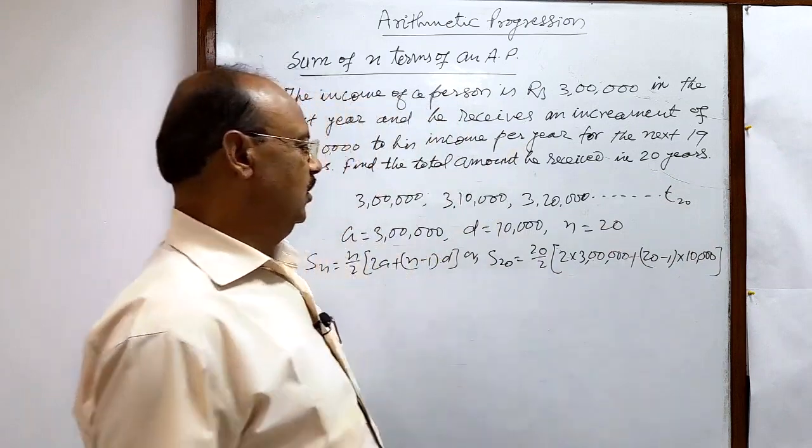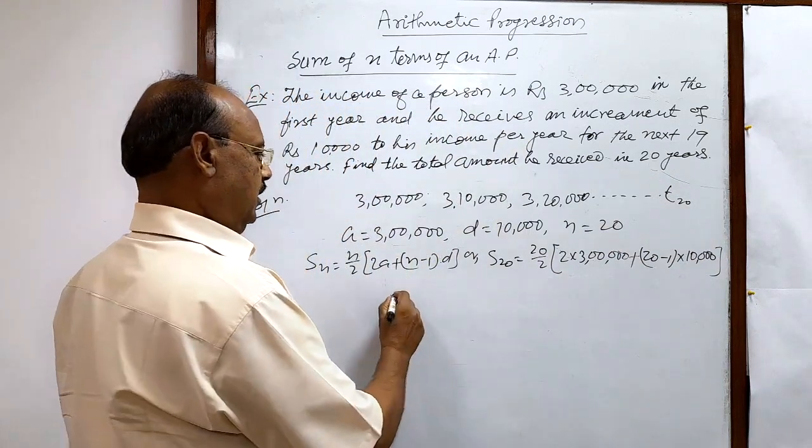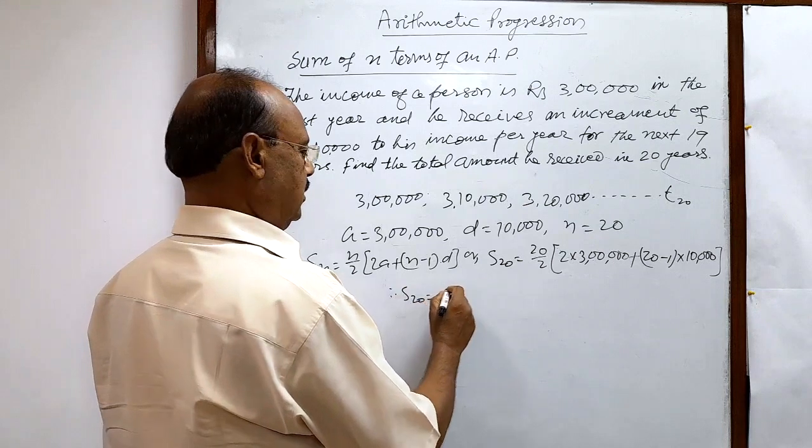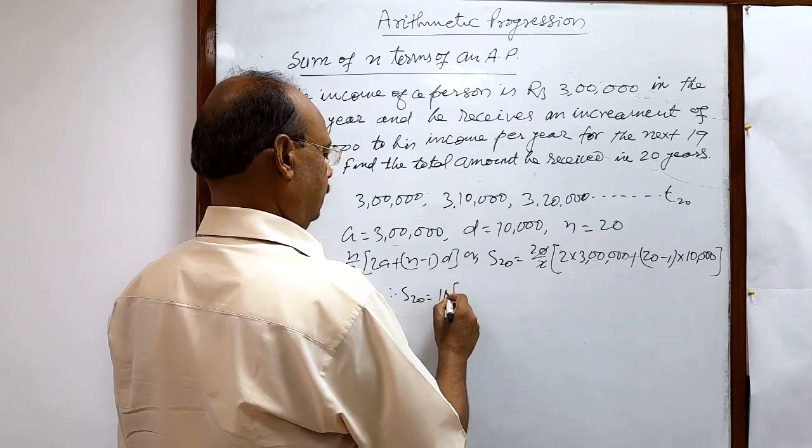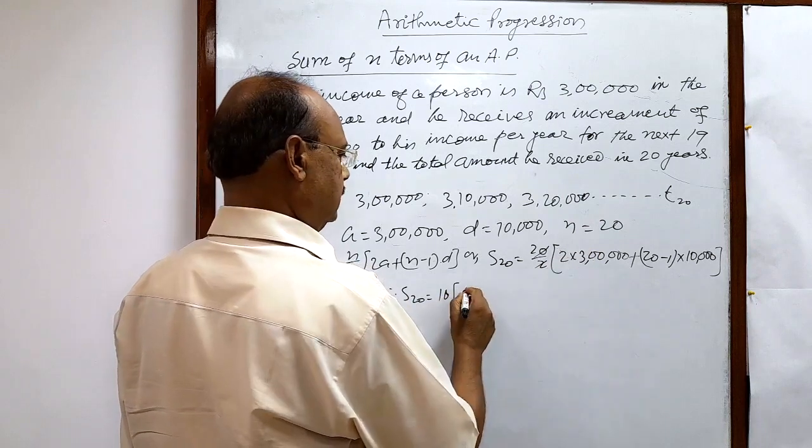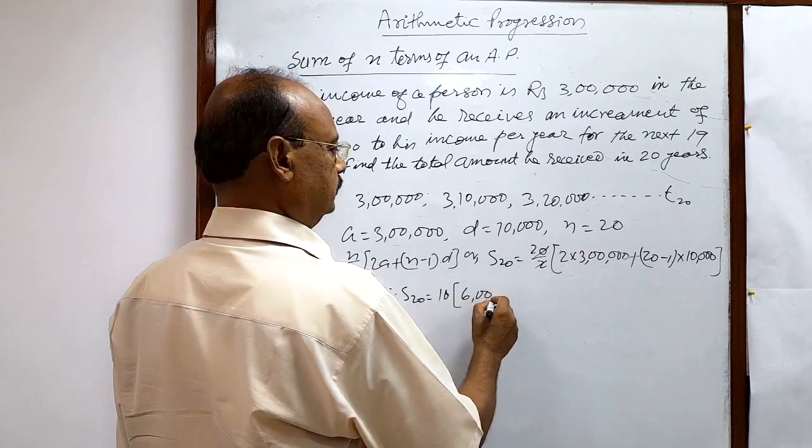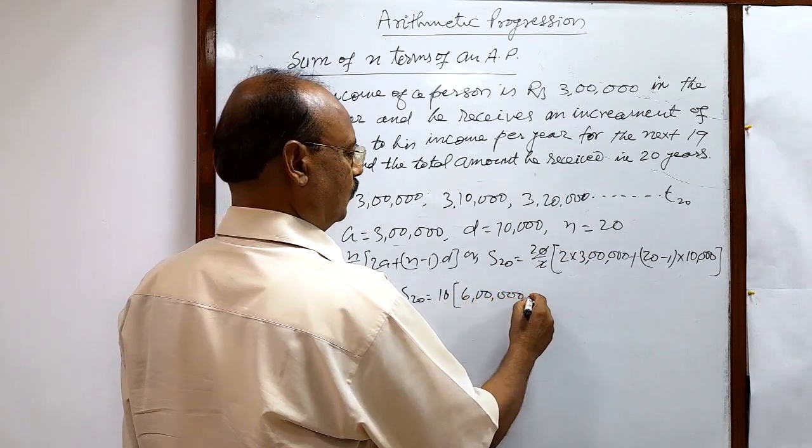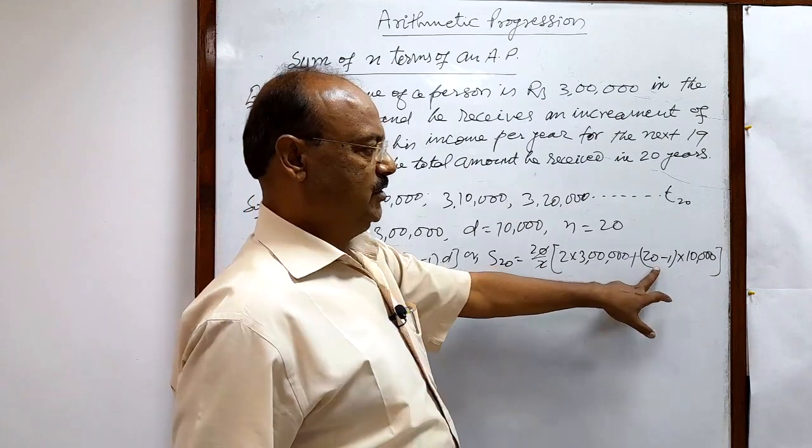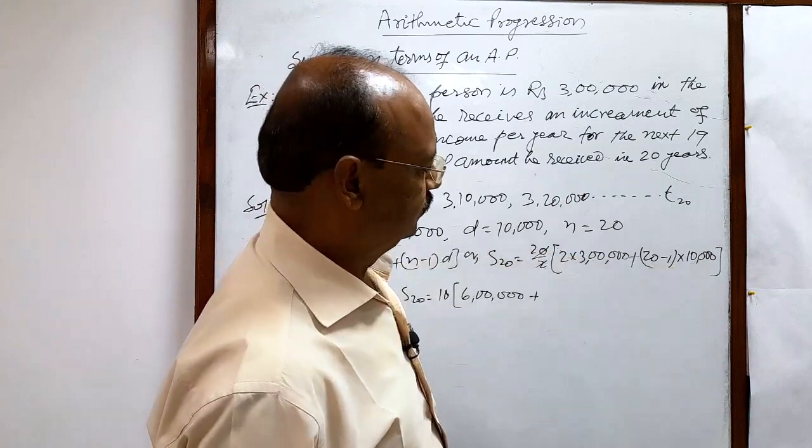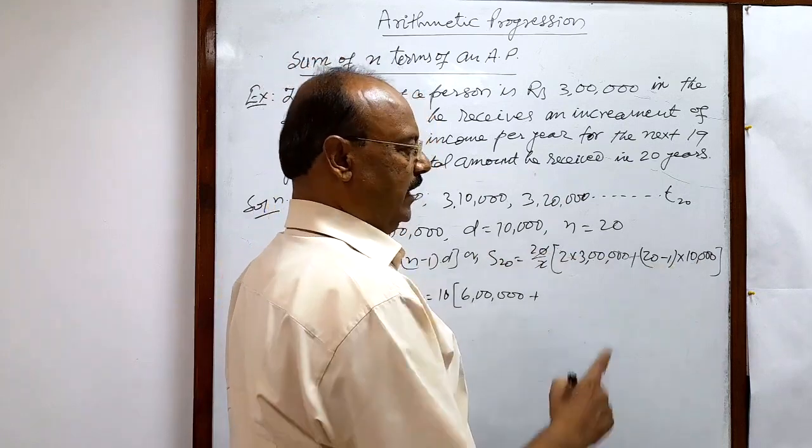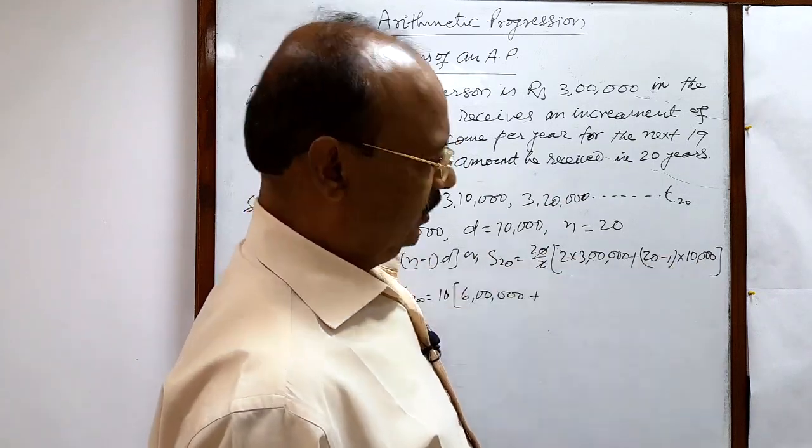We will get the answer. Therefore S_20 equals 10 × [6 lakhs + 19 × 10,000], which is 10 × [6 lakhs + 1 lakh 90,000].